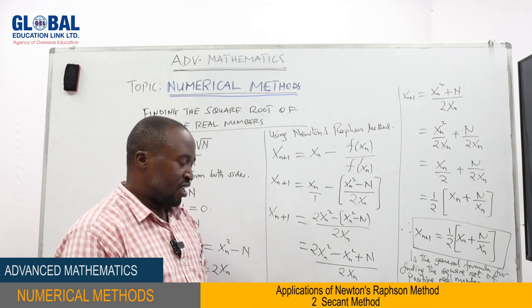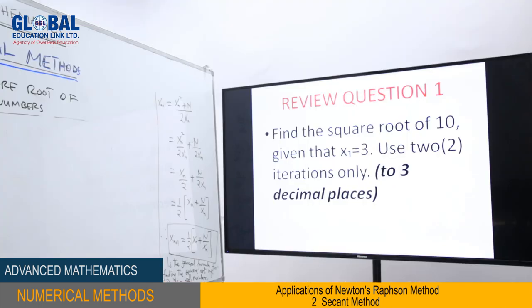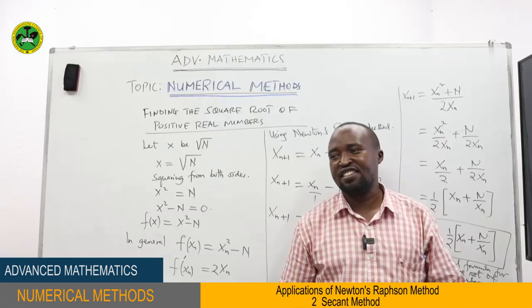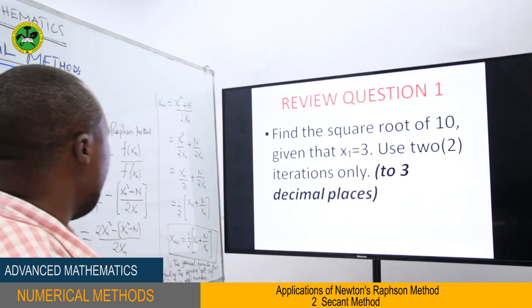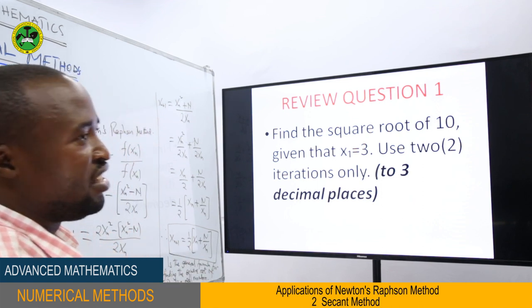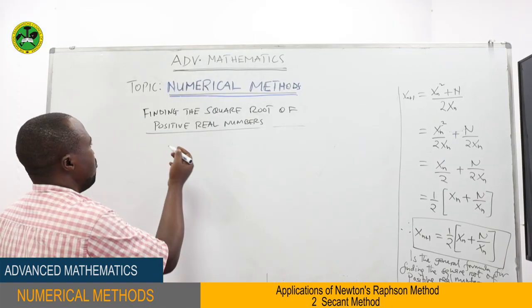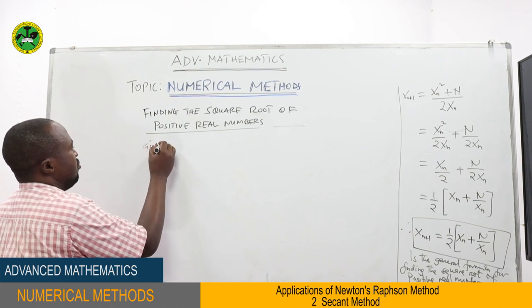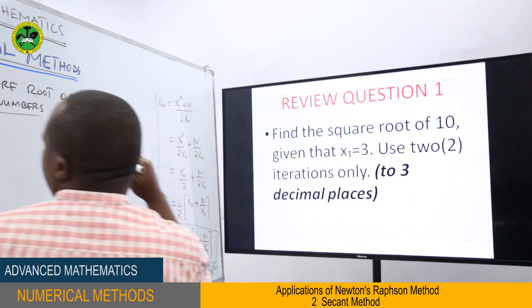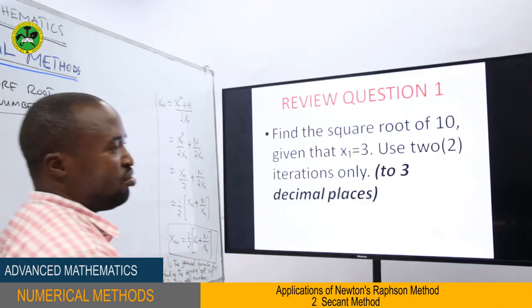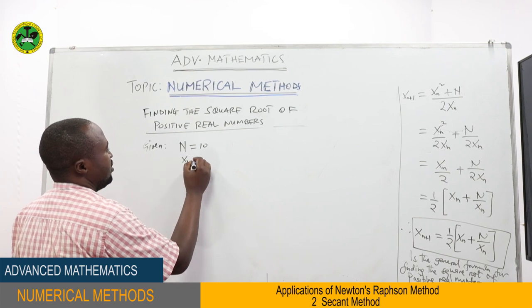Review question 1 says: find the square root of 10 given that X1 = 3, using 2 iterations only, with the answer correct to 3 decimal places. From the question, N = 10 and X1 = 3. Our general formula is Xn+1 = (1/2)(Xn + N/Xn).